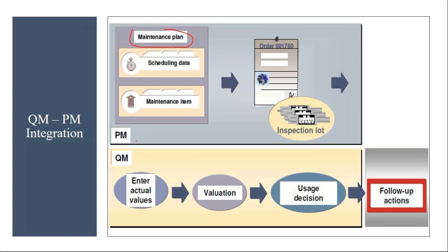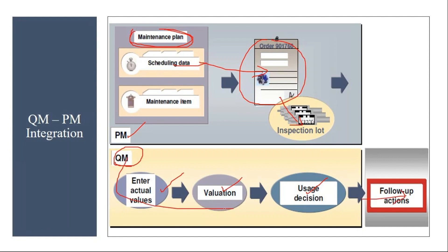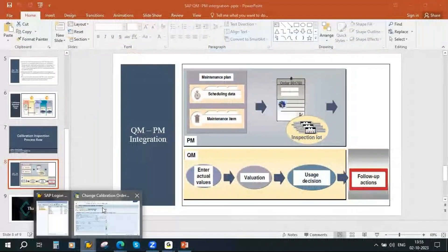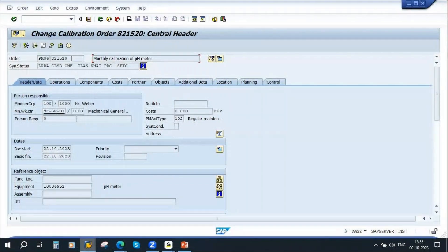From the PM side, they create a maintenance plan. When they schedule it, it will generate an order once that particular period is reached. Along with the order, there will be an inspection. In that inspection lot, after calibration, from the QM side we will be entering results recording, valuation, followed by usage decision and follow-up functions — these we have already covered from our QM perspective. I will show you an order — you can see here, this is a calibration order.